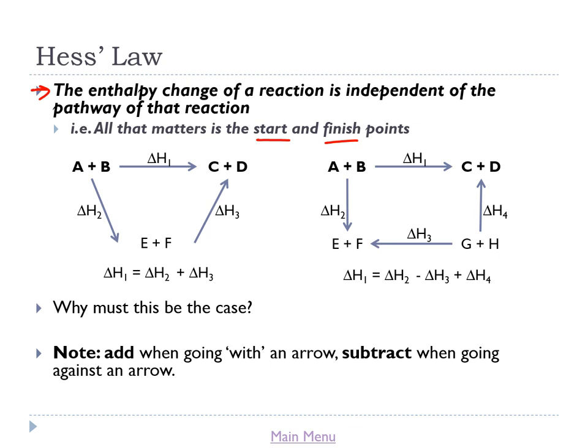For example, imagine we have A and B reacting to make C and D, and ΔH1 is the enthalpy change we're trying to measure. If we can't measure that directly, but we can measure two alternative reactions — A + B → E + F (ΔH2), and E + F → C + D (ΔH3) — then Hess's law says that ΔH1 = ΔH2 + ΔH3. If we could measure ΔH2 and ΔH3, we could use them to find ΔH1.